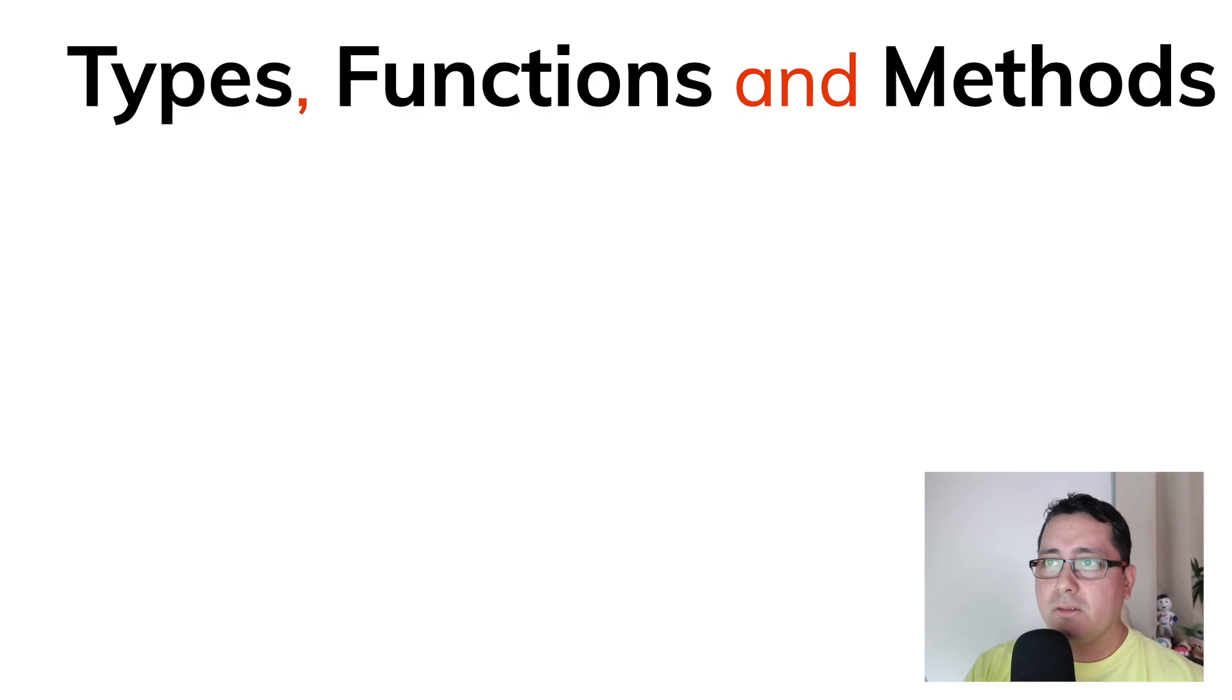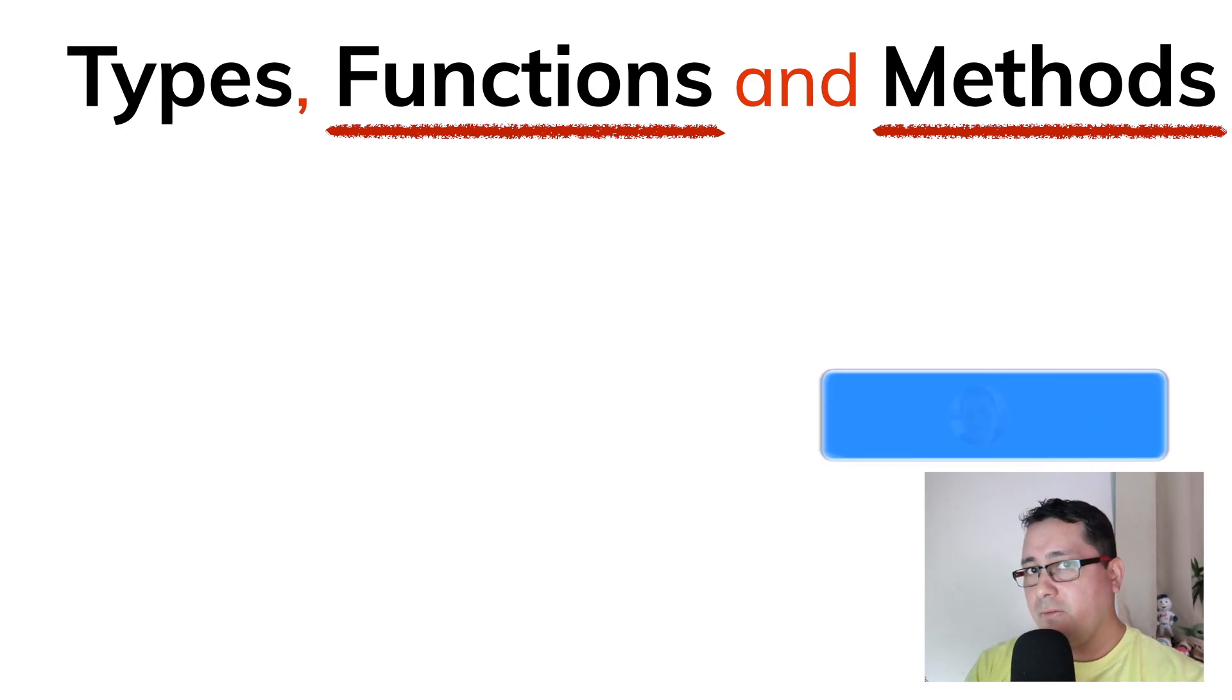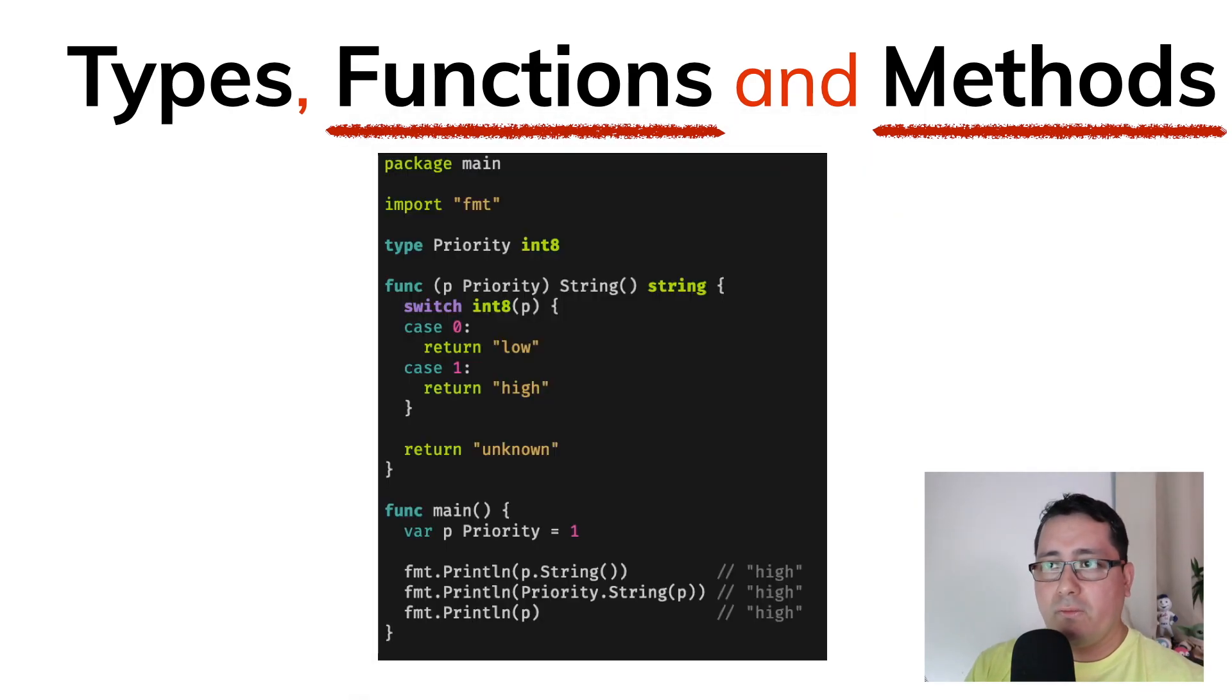I'm mentioning all of this because the functions and methods apply to types. In the case of functions, you don't necessarily have to pass in a value of a type, but in the case of methods, those are associated to the type that it belongs to. Let's look at this code, for example.